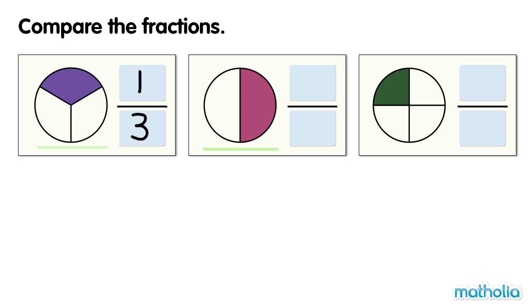This circle has two equal parts. One part is shaded. One half of the circle is shaded.